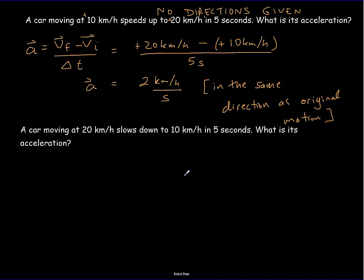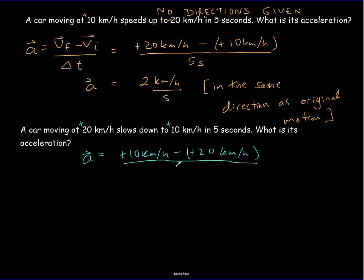Now let's look at the second problem. No directions are given, so we assume the initial direction is positive. Our acceleration is the final speed, +10 km/h, minus the initial speed, +20 km/h, all over five seconds. This time we get a negative result: 10 minus 20 is −10 km/h in five seconds, giving an acceleration of −2 km/h every second.